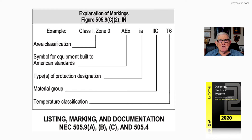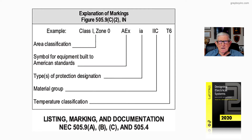Then we have a symbol for equipment built to American standards — it has the 'A' ahead of the 'EX'. The EX comes from Europe, where this equipment might have been manufactured, for example. The 'A' shows they manufactured it to American standards — say UL, ETL, whatever.